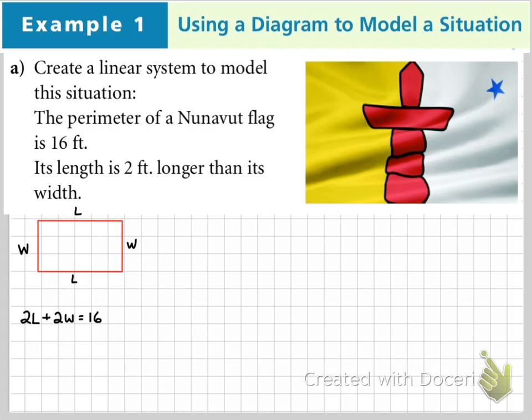Secondly, if it says that the length is 2 feet longer than the width, I can say L equals the width plus 2. There's my system of equations.